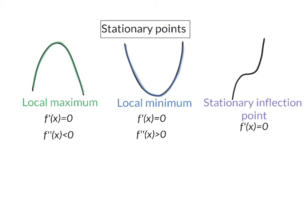The first two stationary points can also be called turning points, because the gradient turns from positive to negative or from negative to positive. The third stationary point is an exception: if the gradient was positive before this stationary point it is positive after it again, or if the gradient was negative before it stays negative after. This stationary point is called a stationary inflection point because the only thing that happens here is that the concavity changes, and this means its second derivative is equal to zero.